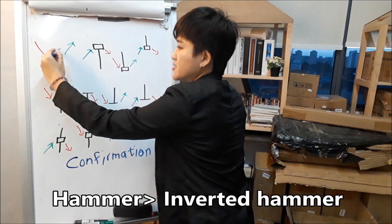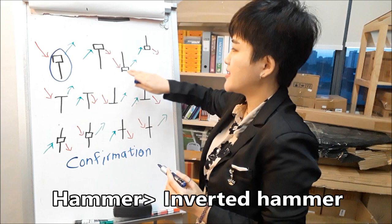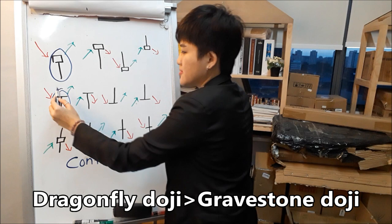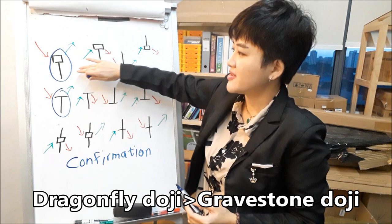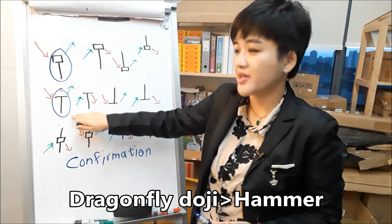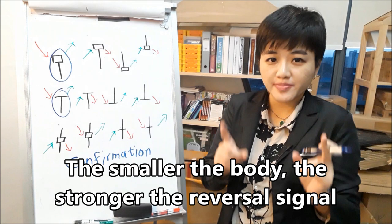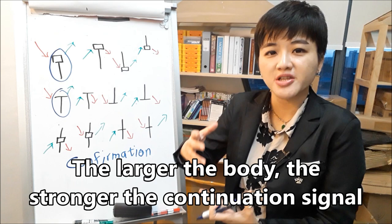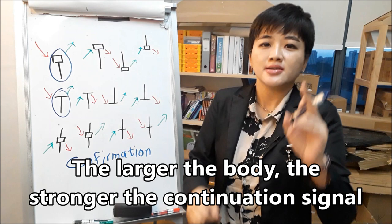If you compare this pattern and this pattern, both will cause the end of a bearish trend to go up. Which one is stronger? If you know the psychology, you will know that this one is stronger in terms of bullishness. And hence, the bullish strength for this pattern will be stronger than that pattern. But if you compare these two, which one is a stronger bullish pattern? The answer would be this pattern. Because the smaller the body, the stronger will be the reversal signal. But for a continuation candle, you want the body to be as large as possible — the larger the body, the stronger will be the continuation signal.